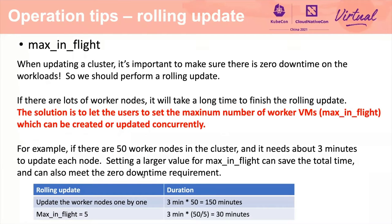Sometimes users may need to update the cluster. It's important to make sure that there is zero downtime on the worker nodes, so we should perform a rolling update, which means updating the worker nodes one by one. But if there are a lot of worker nodes, it may take a long time to finish the rolling update. For example, if there are 50 worker nodes in the cluster and it needs about three minutes to update each worker node, then it needs about 150 minutes in total — which is two and a half hours. The solution is to let the user set the maximum number of worker VMs which can be created or updated concurrently.